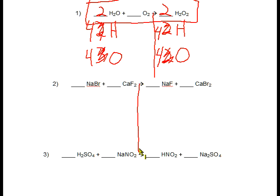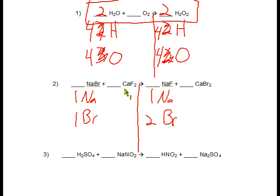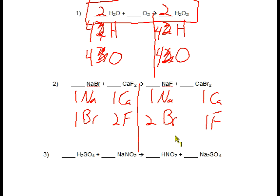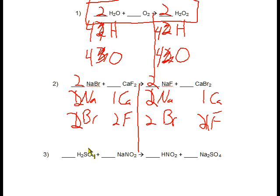For number two, we're going to do the same thing — count how many atoms of each element we have on each side. So we have one sodium on the left, one on the right. Bromines: we have one on the left and two on the right. Calciums: we have one on the left, one on the right. And fluorines: we have two on the left and one on the right. So just pick one and start balancing. I'm going to do fluorines — two on the left, one on the right, so we need a two here. That also now gives us two sodiums, so we put a two here for sodium. That also now gives us two bromines, and it looks like we're all balanced now.